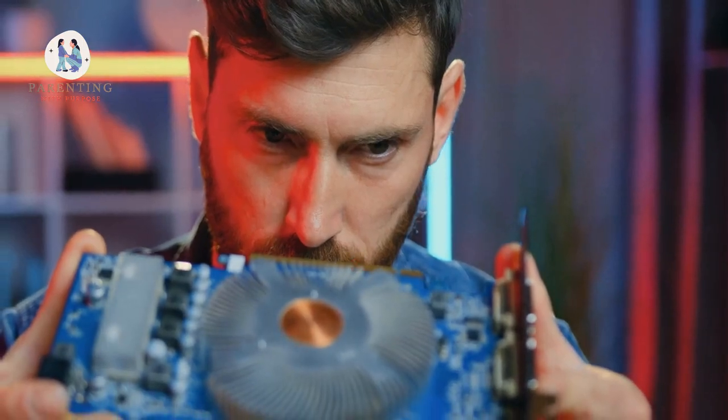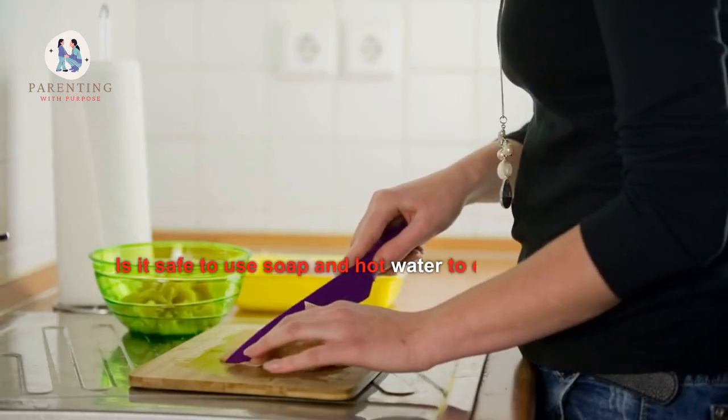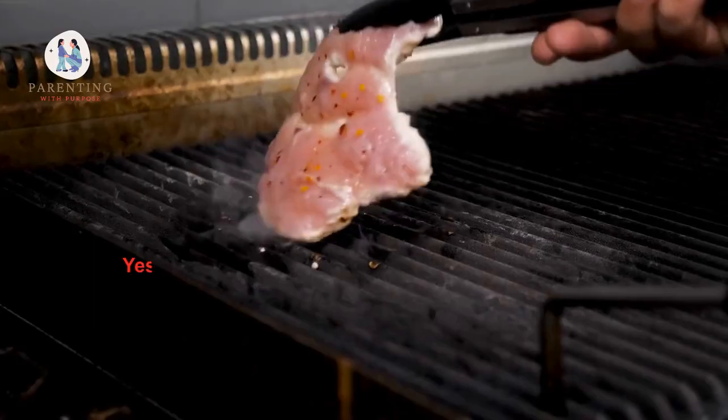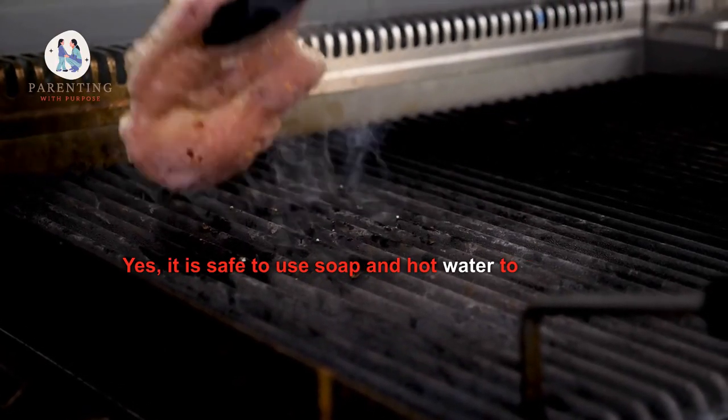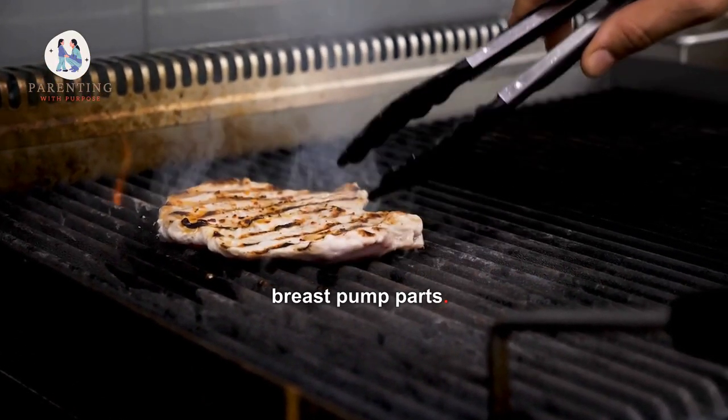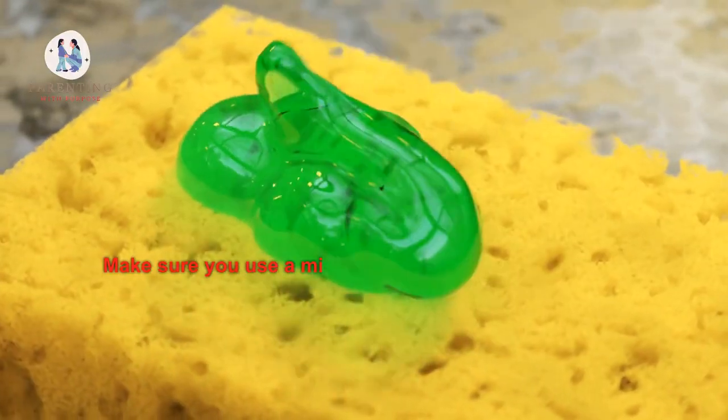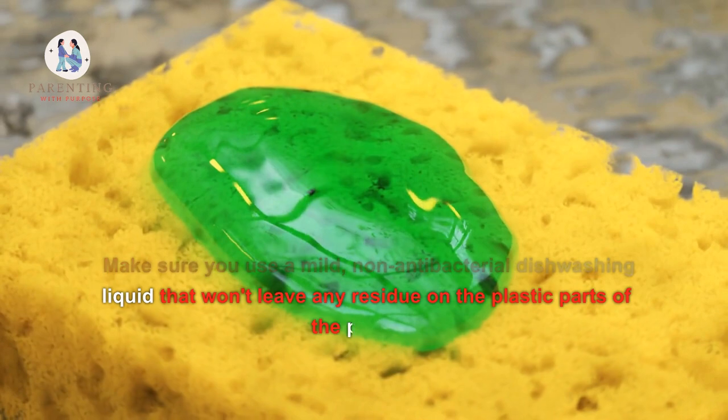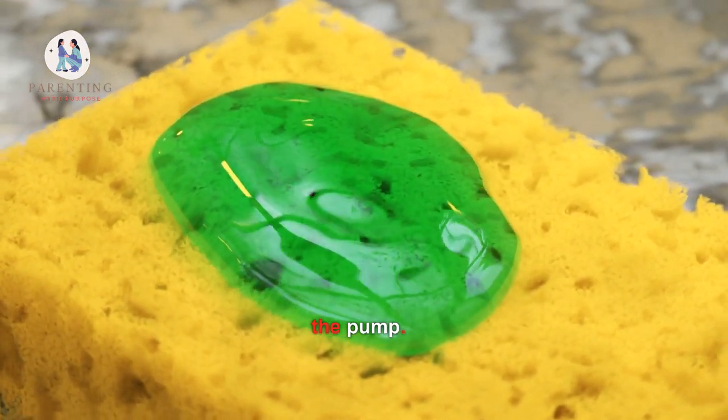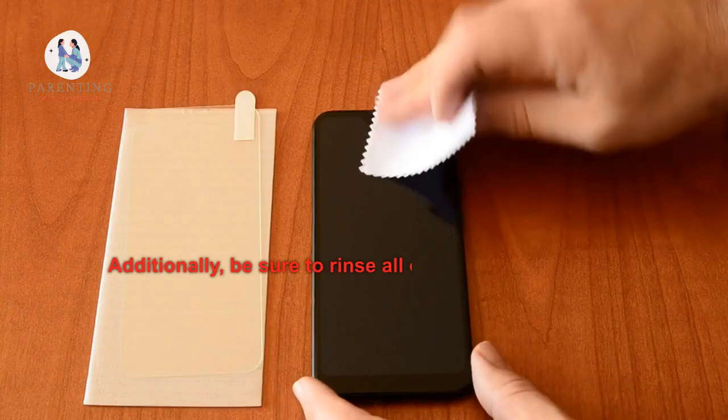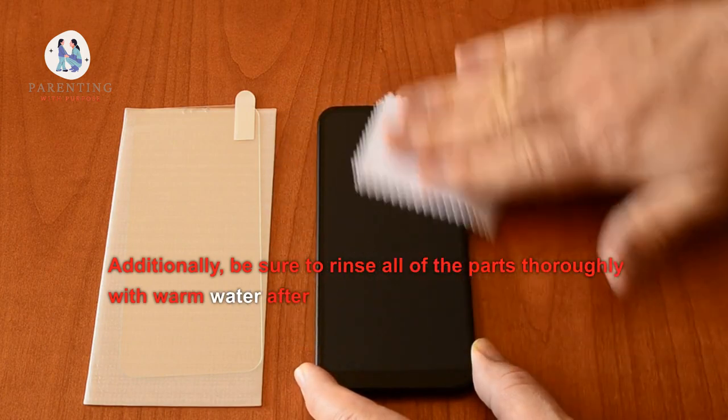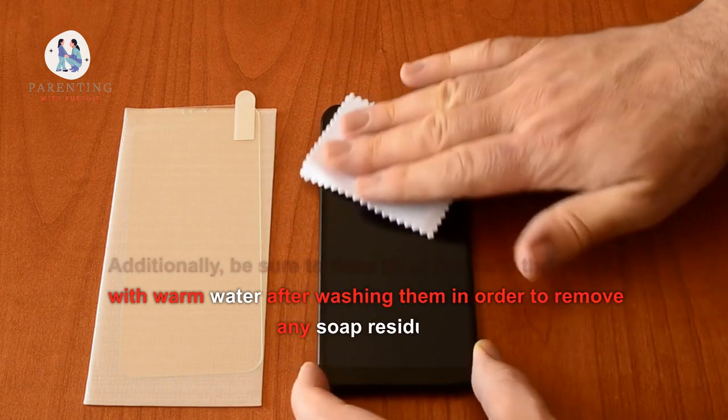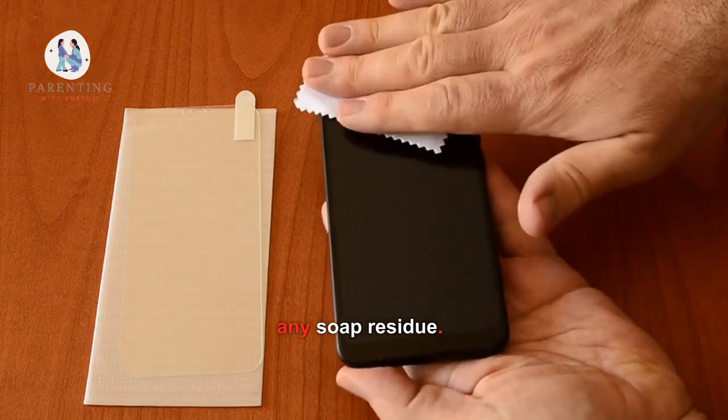3. Is it safe to use soap and hot water to clean the breast pump parts? Yes, it is safe to use soap and hot water to clean the breast pump parts. Make sure you use a mild, non-antibacterial dishwashing liquid that won't leave any residue on the plastic parts of the pump. Additionally, be sure to rinse all of the parts thoroughly with warm water after washing them in order to remove any soap residue.